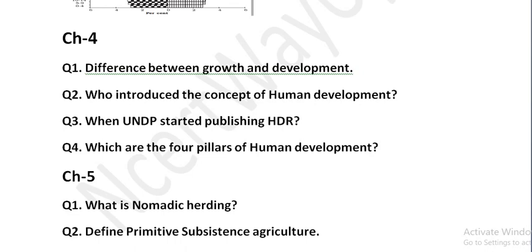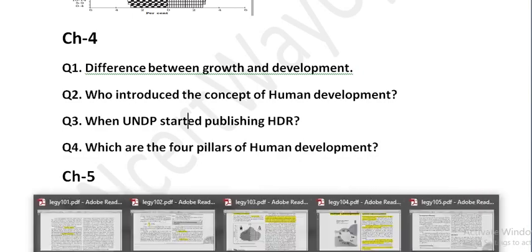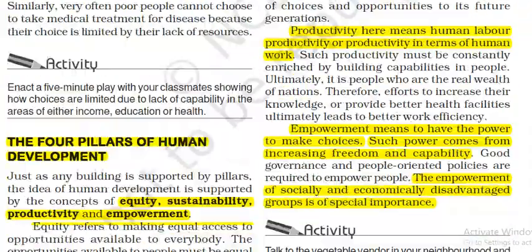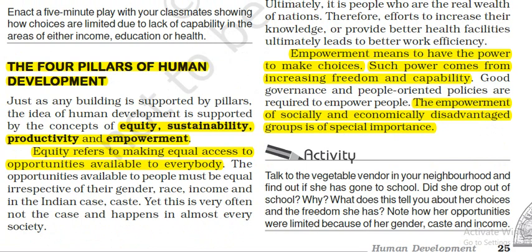Who introduced the concept of human development? Dr. Mahbub ul Haq, a Pakistani academic, introduced the concept of human development. HDR — Human Development Report — is published by UNDP (United Nations Development Programme). Since 1990, UNDP has been publishing the HDR yearly. The four pillars of human development are: Equity, Sustainability, Productivity, and Empowerment.